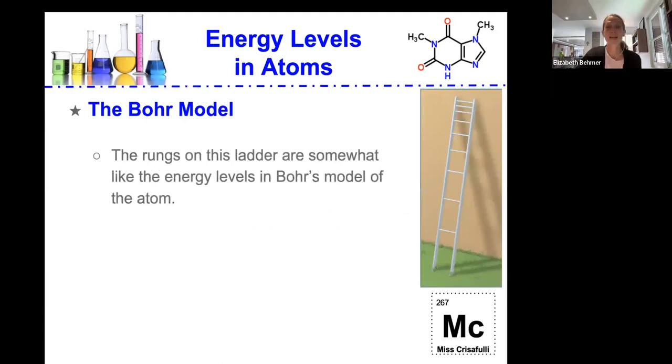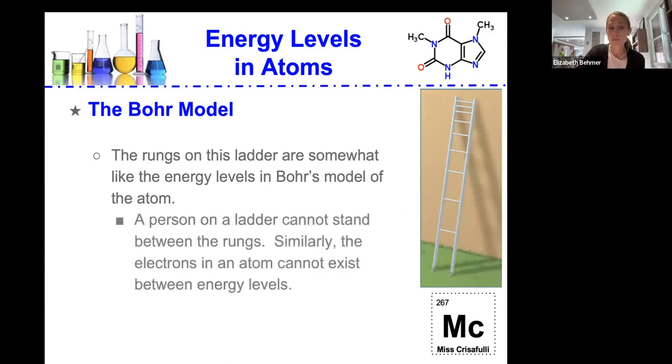Energy levels in atoms. So the Bohr model states, similar to the rungs on this ladder, are somewhat like the energy levels in Bohr's model of the atom. A person on the ladder, for example, cannot stand between the rungs. Similarly, the electrons in an atom cannot exist between energy levels.